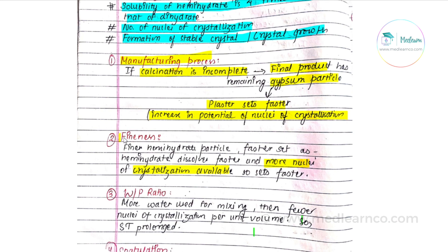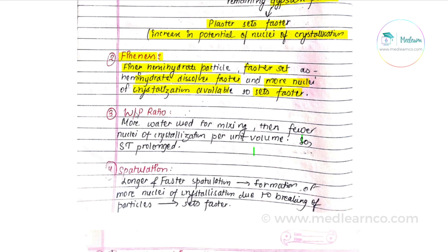Second factor is fineness. Fineness affects the setting time: finer the hemihydrate particles, faster the set, because the hemihydrate will dissolve faster. The finer the particles, the more nuclei of crystallization will also be available, so setting will be faster.